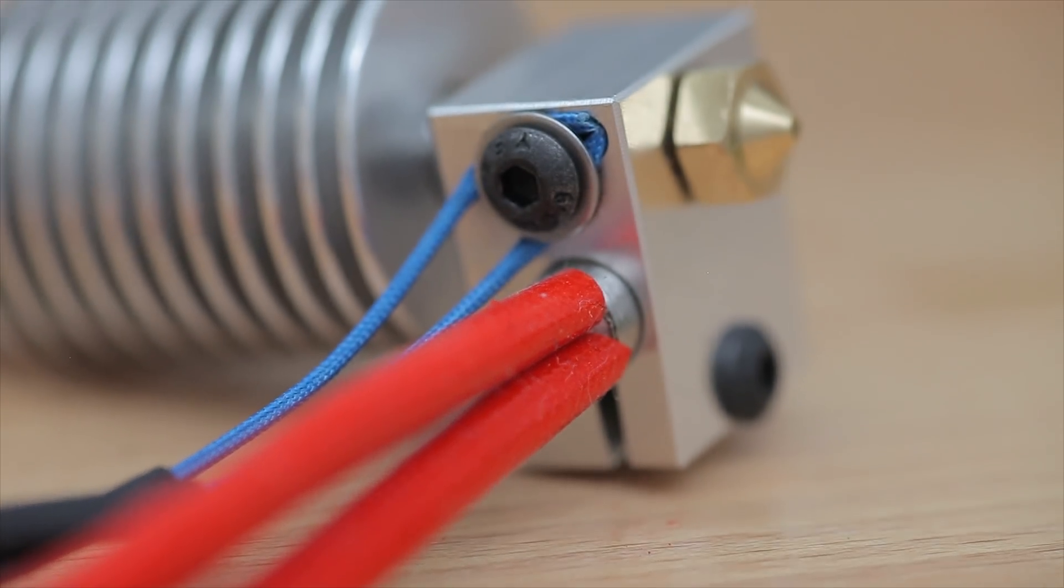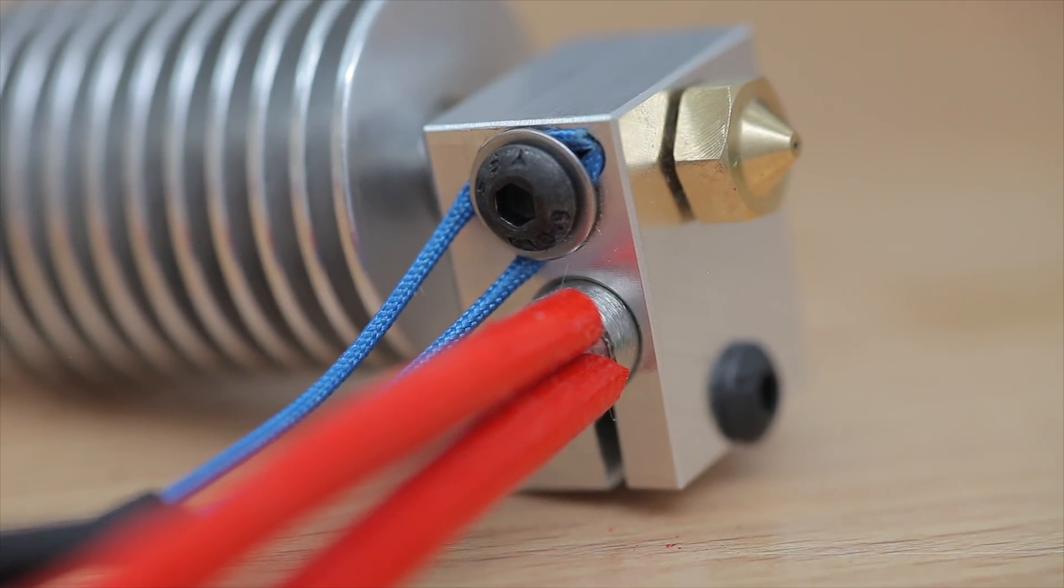E3D-like means the exact same way the E3D V6 attaches a thermistor. Some people hate that, I know, but if you do it right once, you'll never have to do it again.